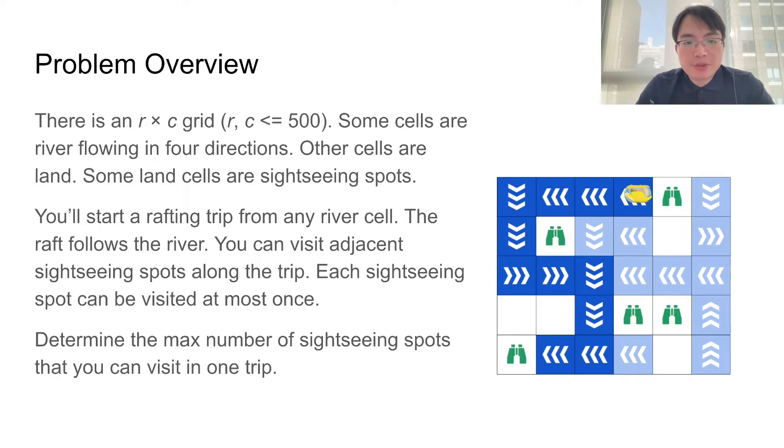You will start a rafting trip from any river cell of your choice. Your raft will follow the river and you can visit adjacent sightseeing spots along the trip. Note that each sightseeing spot can only be visited at most once.